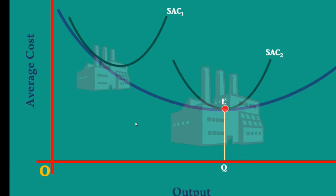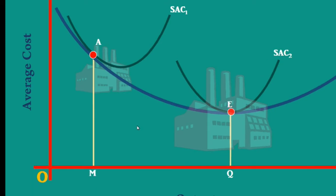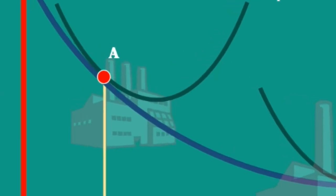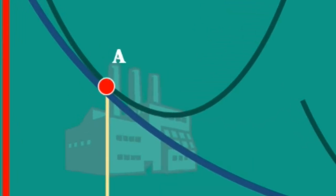It is on the falling side of the Long Run Average Cost Curve. The firm is operating at point A producing output M. Point A is on the falling side of SAC1. It is not the minimum point of SAC1. Its minimum point is B.